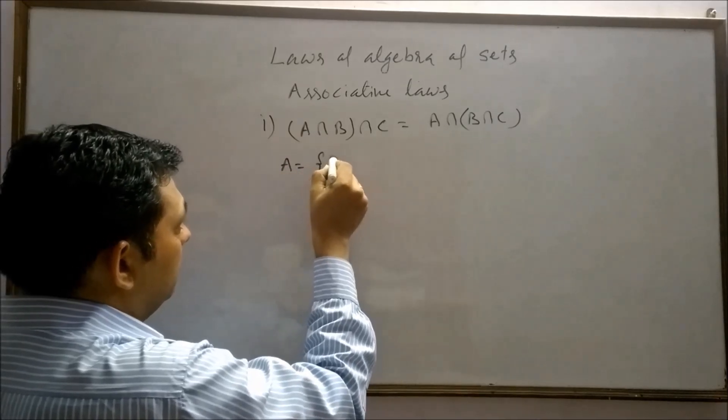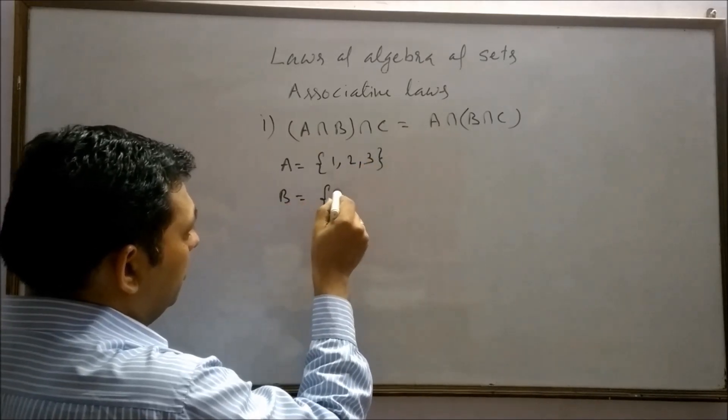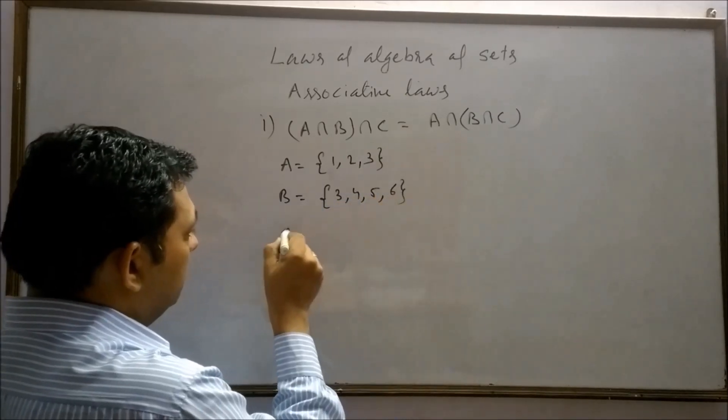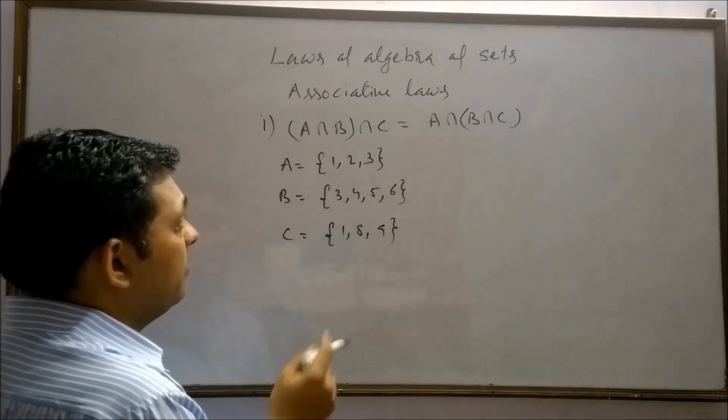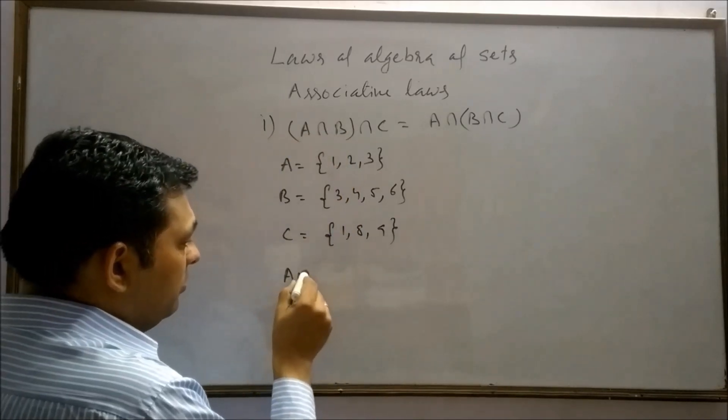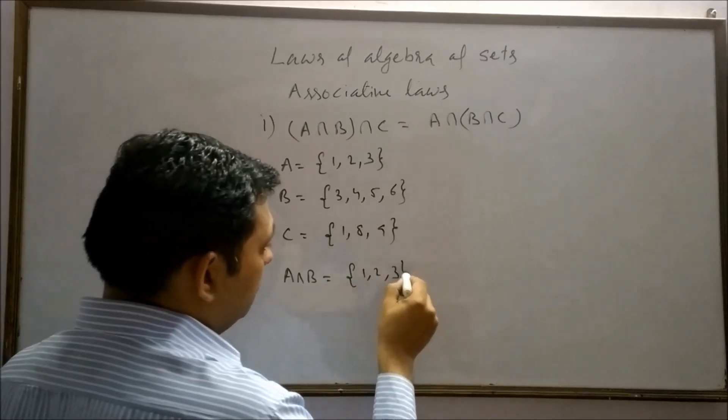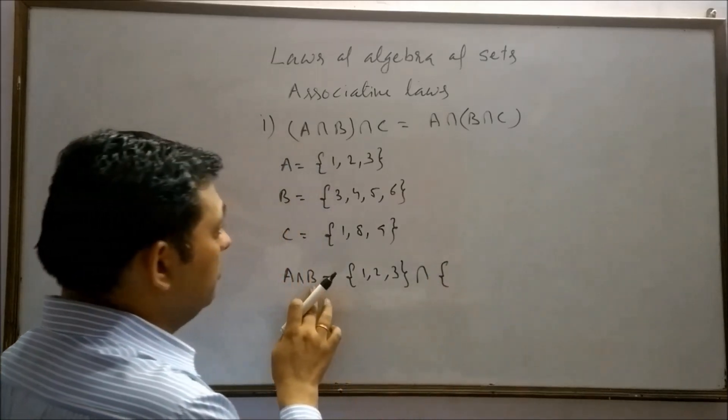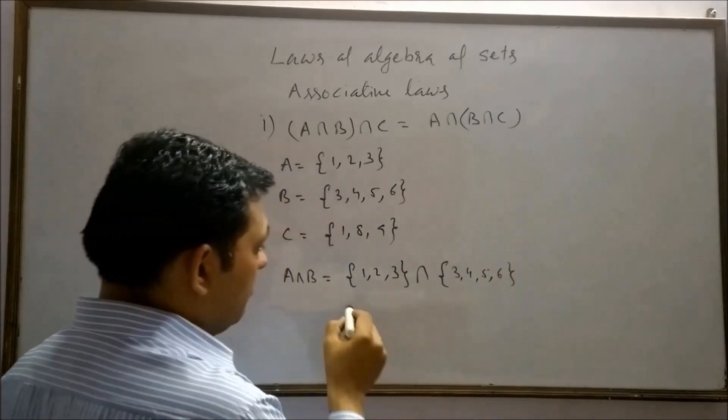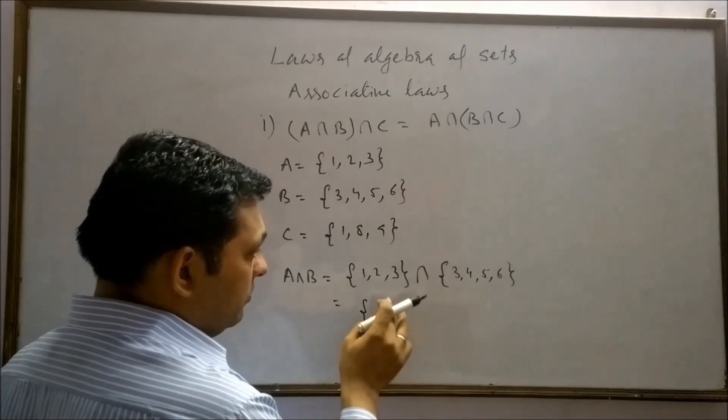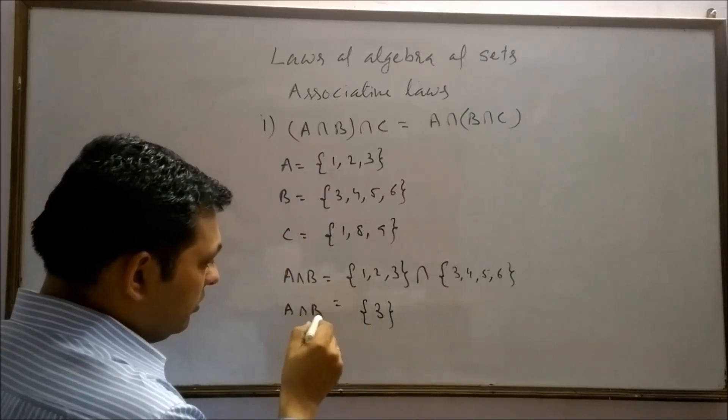Let set A contain first three natural numbers. Set B contain 3, 4, 5 and 6. Let C contain 1, 8, 9 element. A intersection B means 1, 2, 3 intersection B. Set B is 3, 4, 5, 6 element. We will get here 3 is common. Therefore A intersection B is 3.